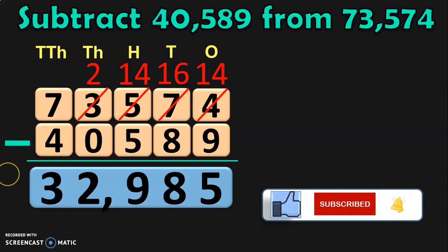Hope you are able to understand so far. In the next sum, we are going to see how to regroup the ten thousands place. I have also included sums in which the bigger number has zeros in it, so let us see how to do the subtraction when you have zeros in the bigger number.